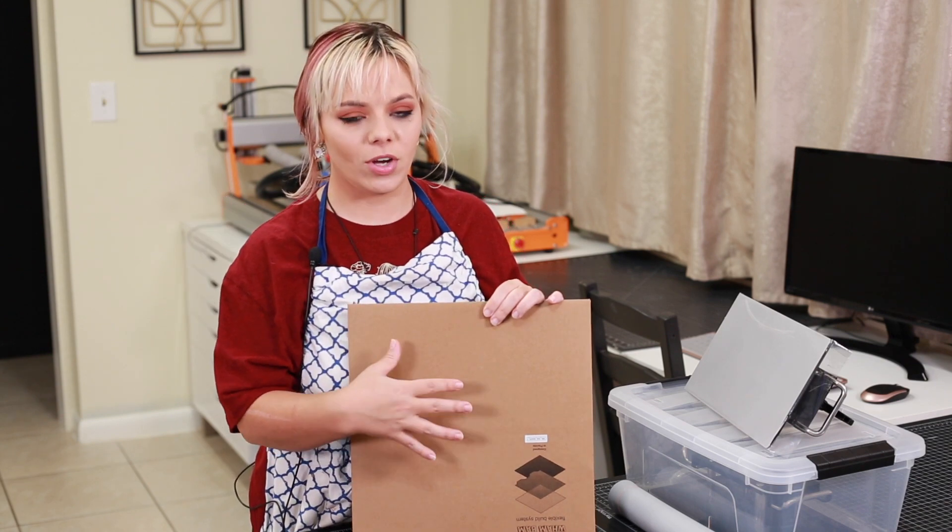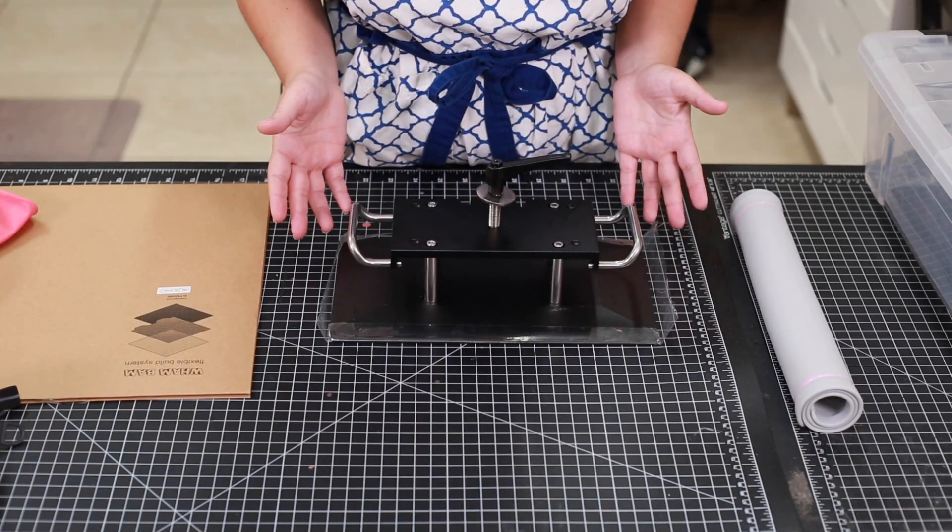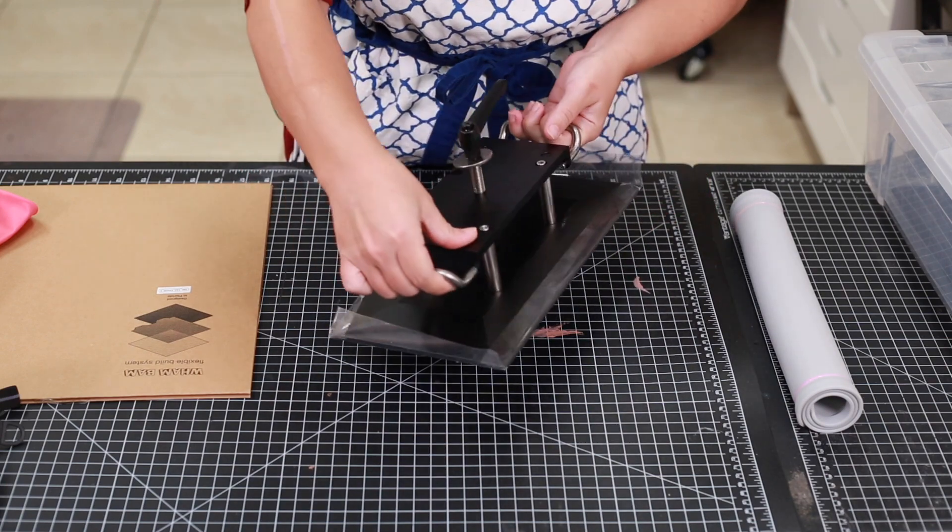It's just easier to get your prints off of. So I highly recommend getting one of these and using it before you use your equipment. So here is the build plate for the Jupiter. It comes with plastic already on it.